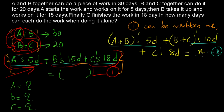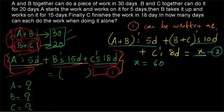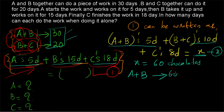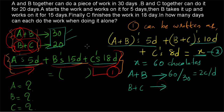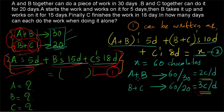Now we use the chocolate approach. X is the total amount of work, equal to the total number of chocolates, which equals the LCM of 30 and 20. LCM of 30 and 20 is 60, so X equals 60. A and B finish 60 chocolates in 30 days, so A+B consume 60/30 = 2 chocolates per day. B and C finish 60 chocolates in 20 days, so B+C consume 60/20 = 3 chocolates per day. We now substitute these rates into the equation.